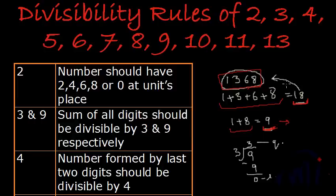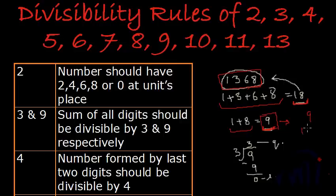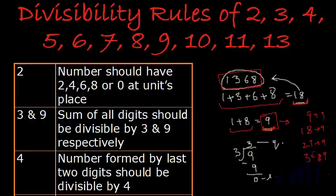You can use this rule recursively for 9: continue adding the digits of the number until you get 9. If you get 9 in the end, the number is divisible by 9. If you remember the table of 9, all the numbers in the table of 9 — their digits add up to give 9. For example, 9 plus 0 is 9, 1 plus 8 is 9, 2 plus 7 is 9, 3 plus 6 is 9. So you can modify this rule for 9 and say: continue adding the digits until you get 9, and if you get 9, the number is divisible by 9.